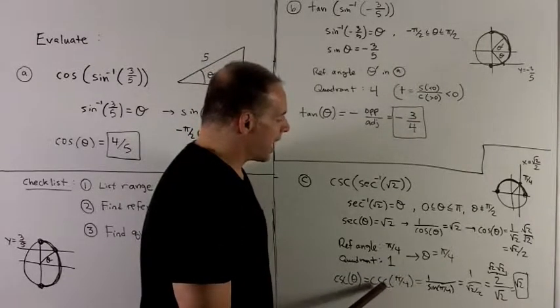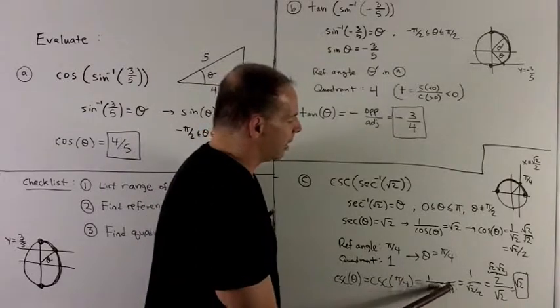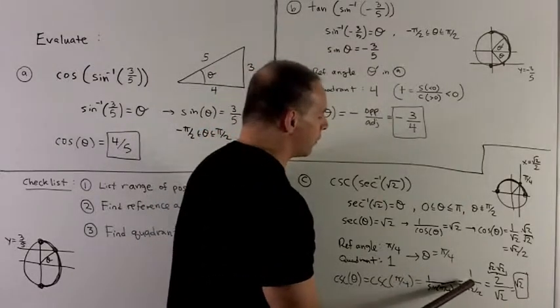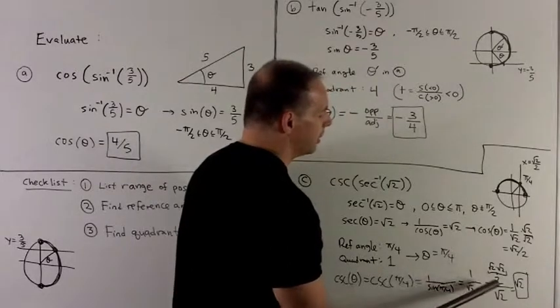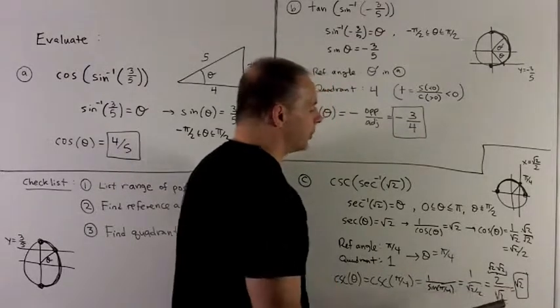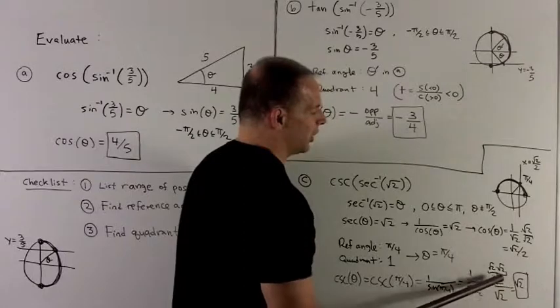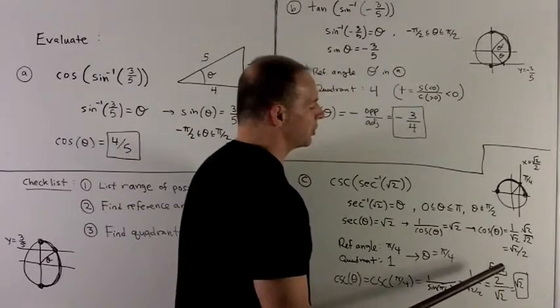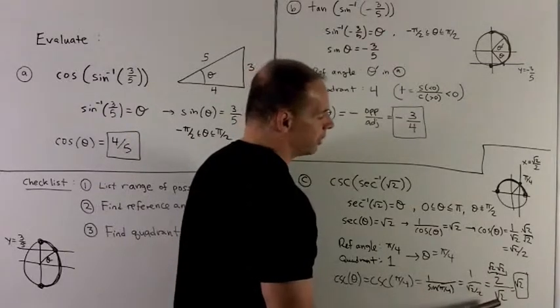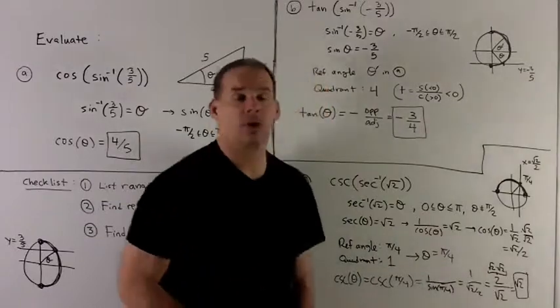Okay, cosecant of theta equals cosecant of pi fourths. That's my reference angle, but we're in quadrant one, so that is the angle itself. Cosecant just says one over sine, so we're looking at one over sine of pi fourths, or one over radical two over two. We flip the two up. That gives me two over radical two. I can break two into radical two times radical two. We get rid of one of each of those, and this collapses to radical two.